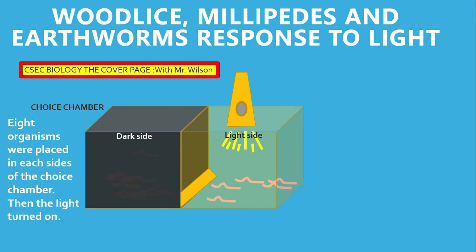If you look closely at the dark side, you should be able to see some organisms there. The particular organism we are looking at is the earthworm; however, the response of the millipede and wood lice would have been similar. You can make a choice chamber at home — just use a box with a partition and a little window at the bottom, so the organism can decide whether to go left or right, into the dark or lit area. A flashlight provides the lighting for the light side, while the dark side is well wrapped in black.